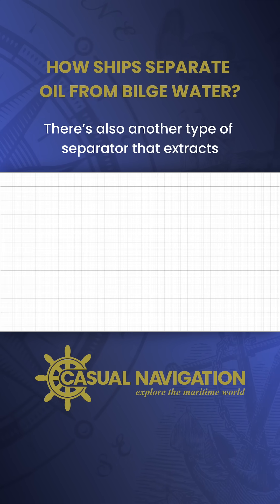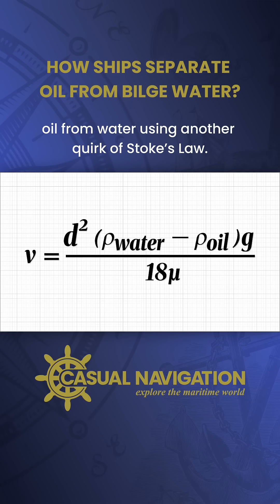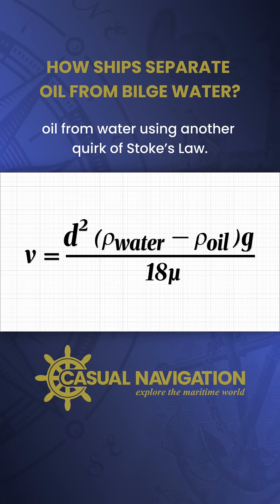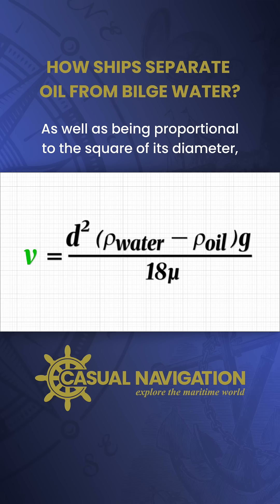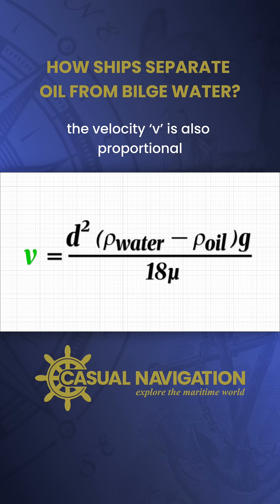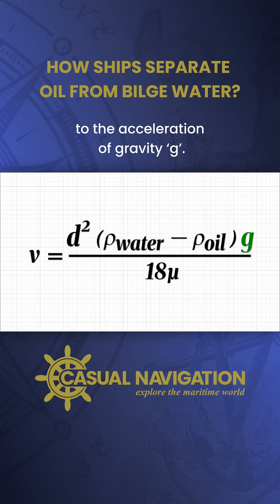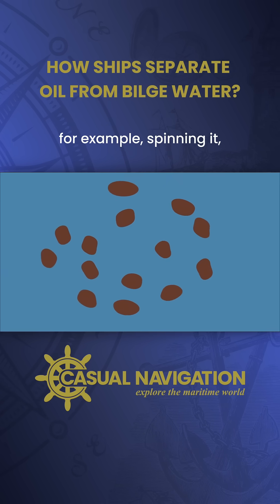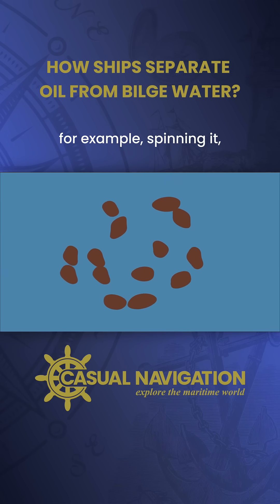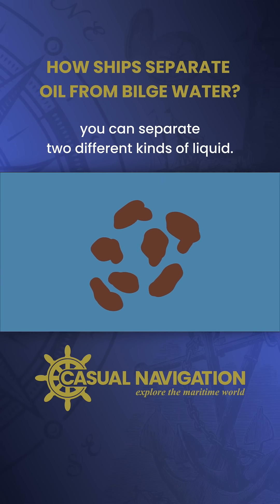There's also another type of separator that extracts oil from water using another aspect of Stokes' law. As well as being proportional to the square of its diameter, the velocity v is also proportional to the acceleration of gravity, g. So if you can accelerate the oil by, for example, spinning it, you can separate two different kinds of liquid.